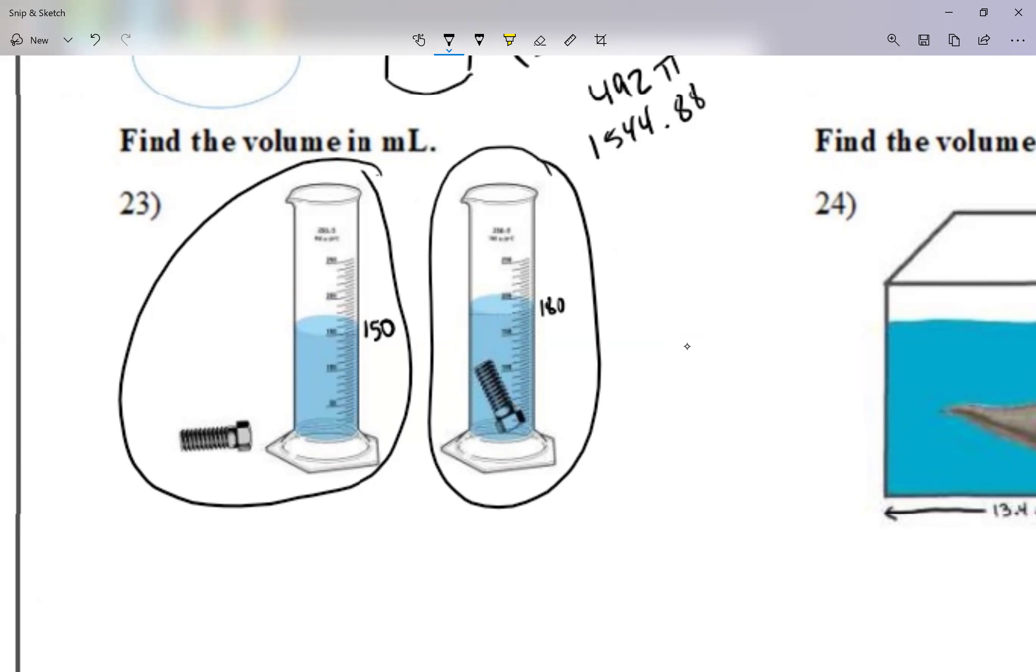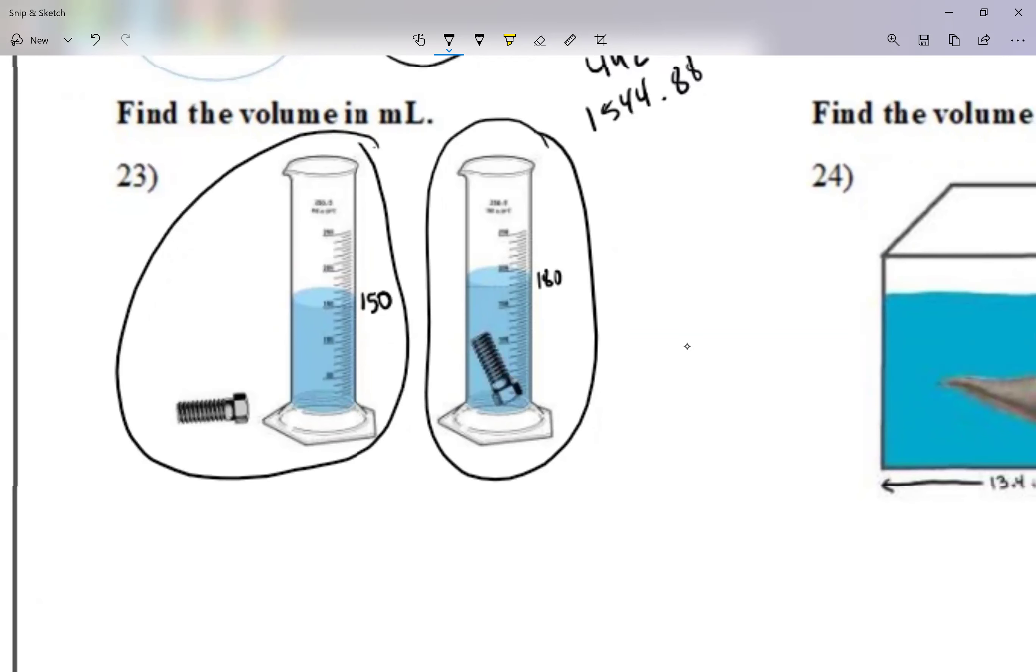So I'm going to say the space inside the screw, the volume of this object – and for your homework I'm going to do different objects, I could do the volume of a key, I could do the volume of a Nintendo Switch, I could do the volume of anything – the way I'm going to do this is I'm just going to subtract the two numbers. So 180 minus 150.